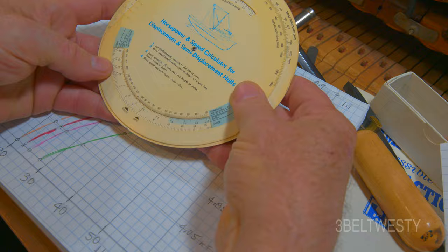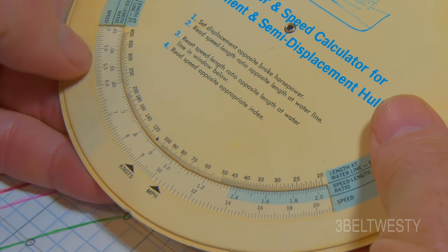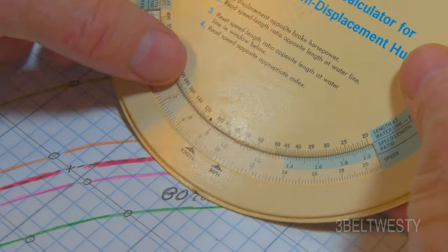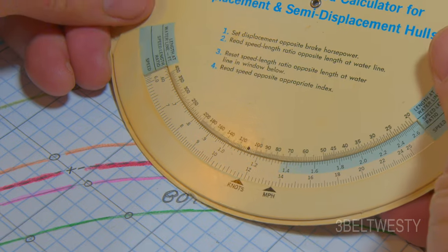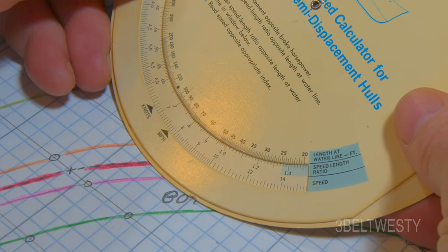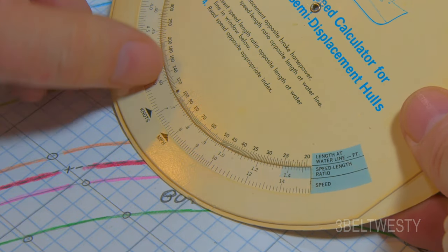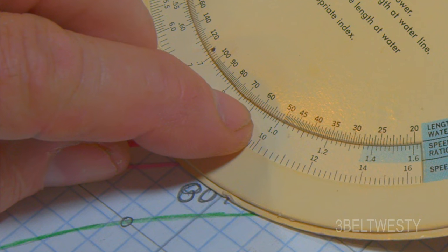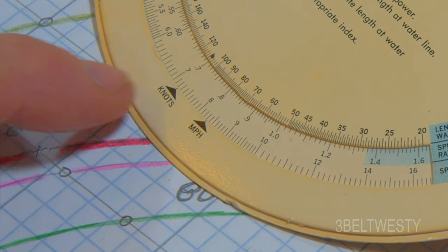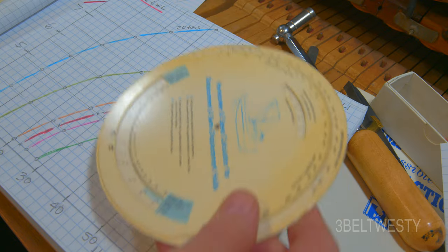There's 60 and 60. Then you get a speed to length ratio here of about 0.9. You take the 0.9 and go over here, right down through here, and you line it up to the waterline length of the boat. You get about 7.2 knots.